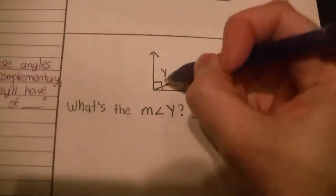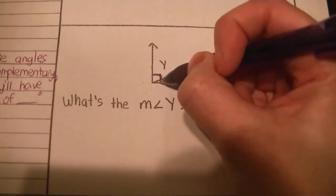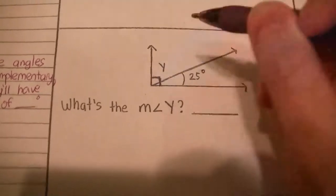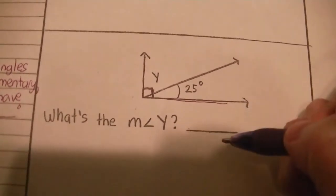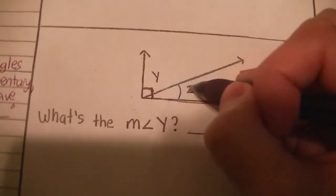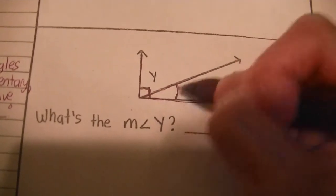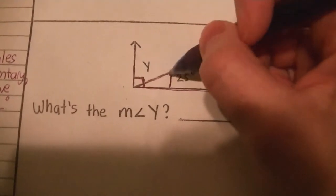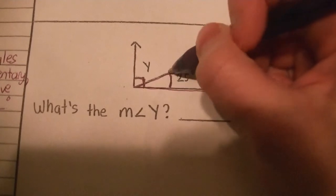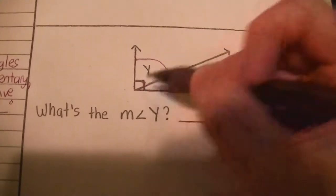In the next example, you'll see a little box. That little box indicates that the angle it marks is equal to 90 degrees. So if this angle right here is 25 degrees, you need to figure out the measurement of angle Y. You should know that this 25-degree angle plus the measurement of angle Y should have a sum of 90 degrees.